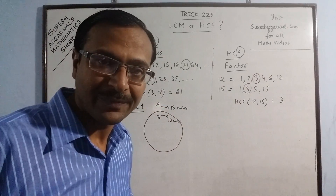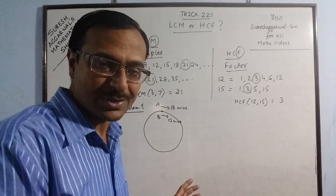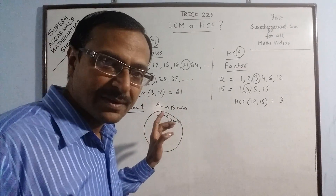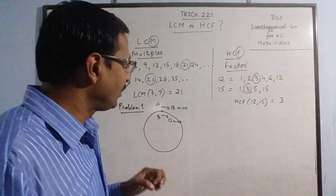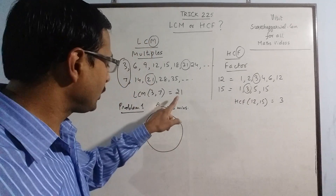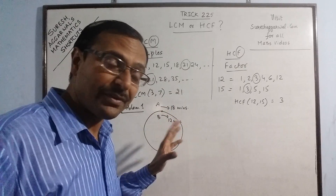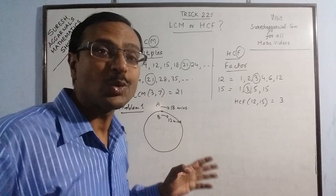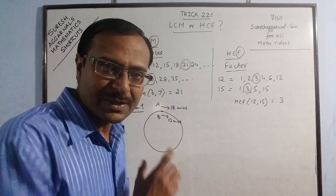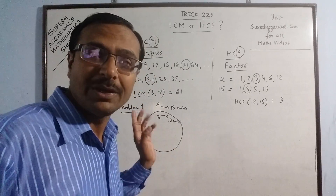Why will the concept of LCM be used in this question? If A is taking 18 minutes to go around once, the time taken for both of them to reach this point again will be greater than 18 minutes. LCM is always greater than the original numbers. The answer here has to be greater than 12 and 18, so the concept of LCM has to be used here. A little understanding and practice will enable you to easily identify this.